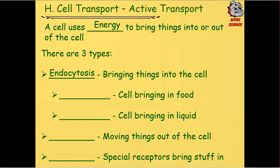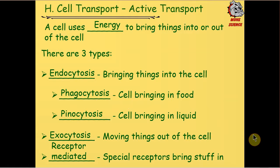There's an active transport called endocytosis, meaning bringing things into the cell. There's two types of those. One is called phagocytosis, which is the cell bringing in food molecules. And there's pinocytosis, where the cell is bringing in liquids. So phago is food, pinno is liquid. There's also moving things out of the cell, which would be exocytosis. Endo means inside and exo means outside. And then finally, there's receptor mediated active transport. And these are special receptors on the cell that are allowing things to pass through.